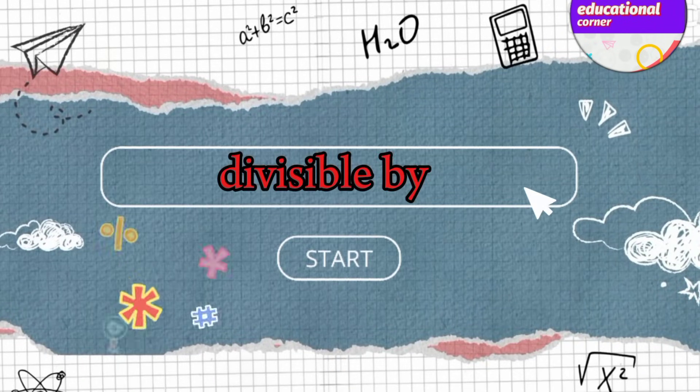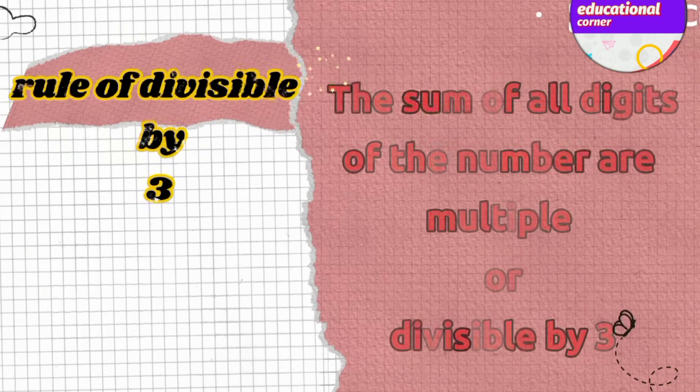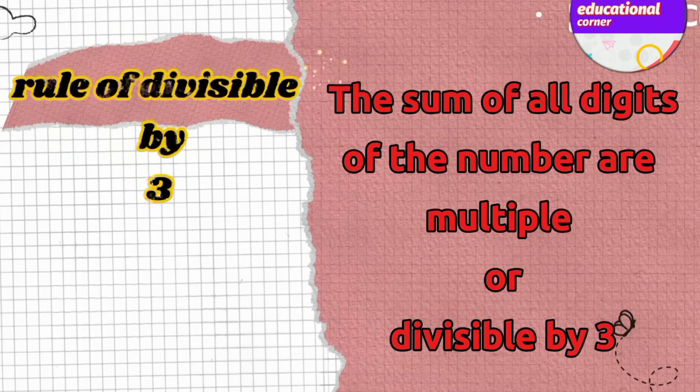Divisible by 3. The sum of all digits of the number must be a multiple of, or divisible by, 3.